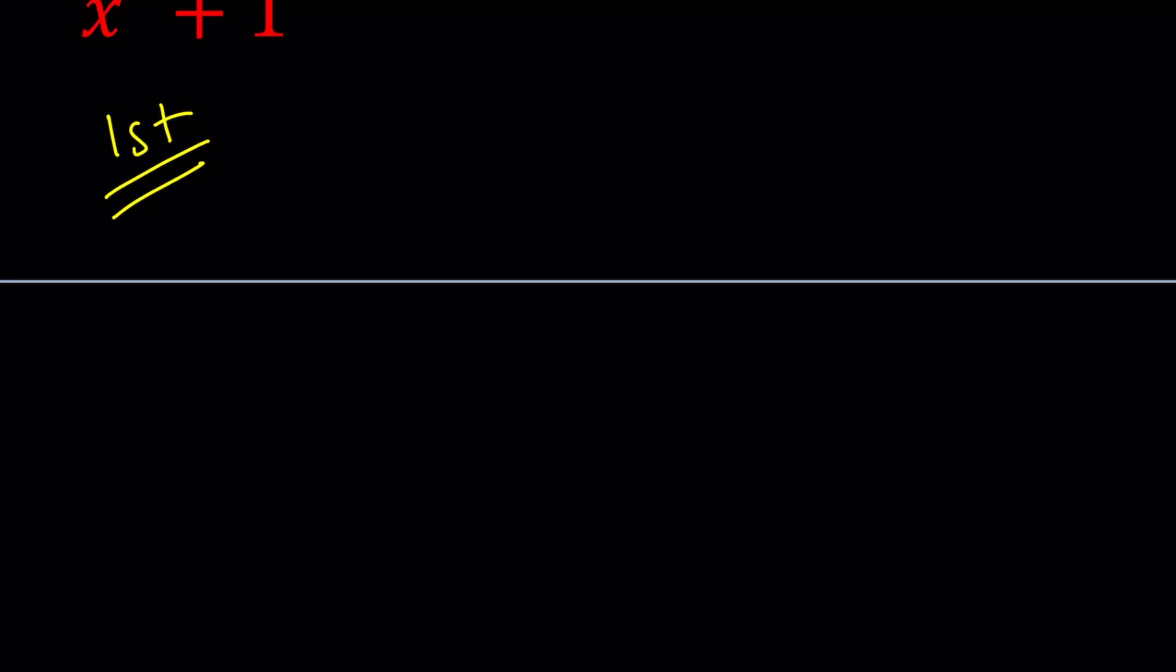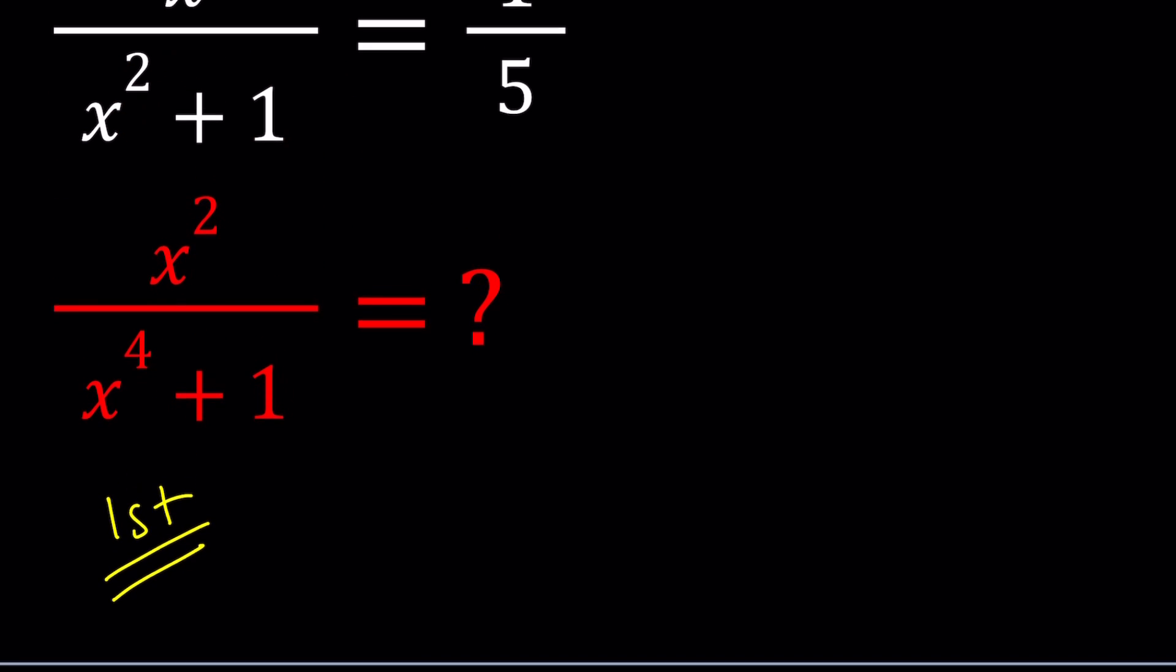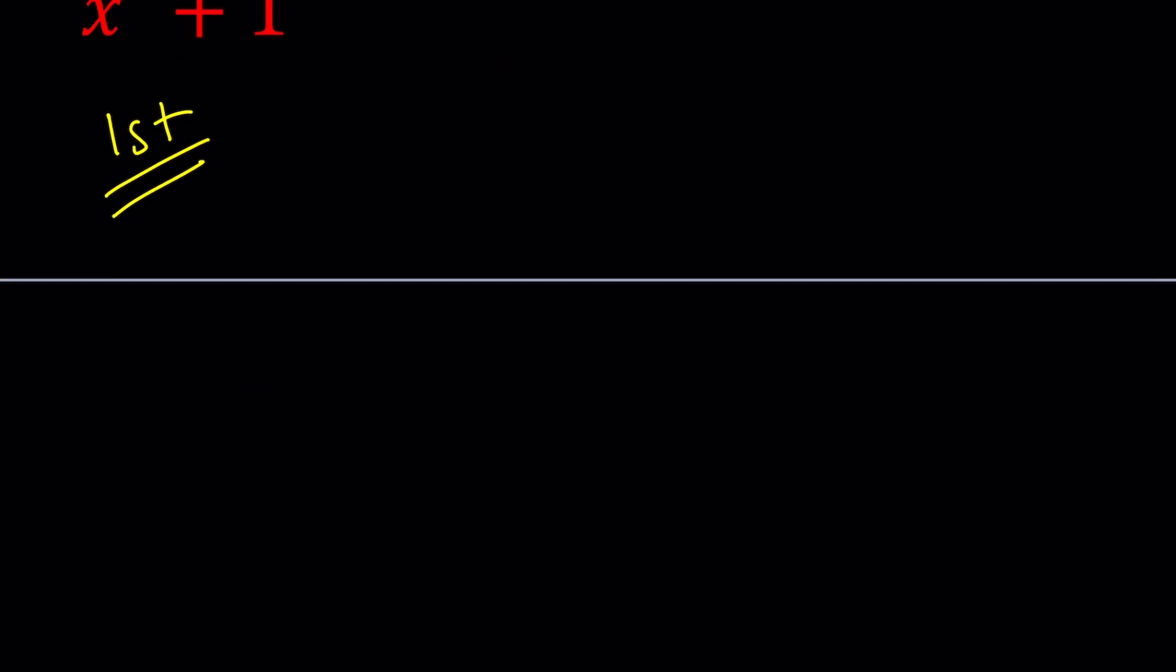For my first method, I'm going to cross multiply the first expression. And that's going to give me x squared plus 1 equals 5x. And now at this point, we can isolate x squared and write it as 5x minus 1.